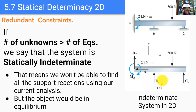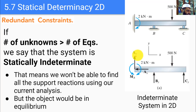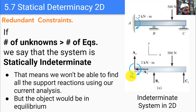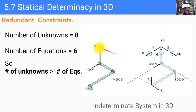Since this is a two-dimensional system, we only have three equations of equilibrium: sum of forces in x equals zero, sum of forces in y equals zero, and sum of moments equals zero. With five unknowns but only three equations, this is a statically indeterminate system — we don't have enough equations to solve for all unknowns.